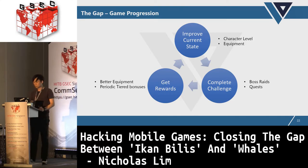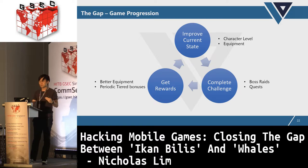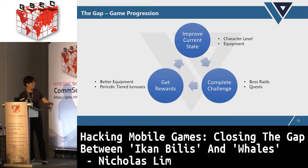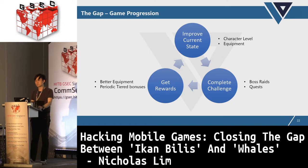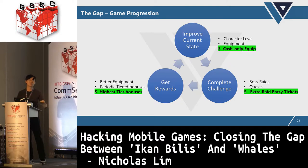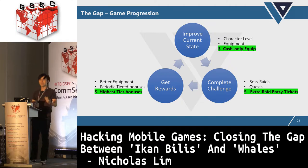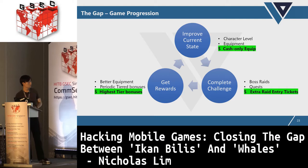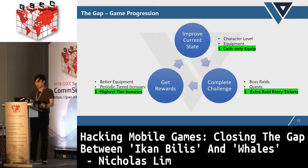Some ways to gauge your current state: character level and equipment. Once you reach a certain level, you can attempt boss raids or quests. If you do well enough, you can get into rankings and receive tiered bonuses. For whales, you can just shortcut — buy equipment, buy extra entry tickets. Maybe others enter five times a week, but you can go ten times a week, get more stuff, and progress even faster.